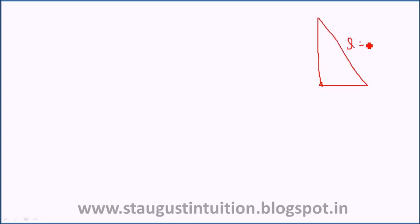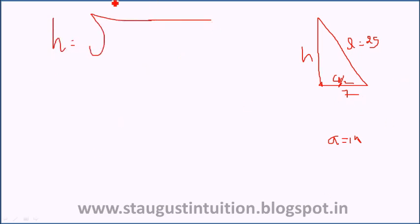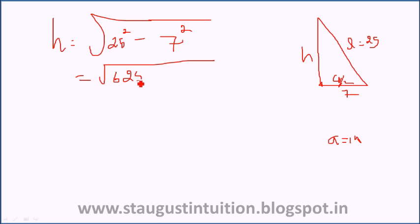Now we will find the height using a right-angle triangle. With slant height L equals 25 and half the base a/2 equals 7, we get height h equals root of 25 squared minus 7 squared, which is root of 625 minus 49, equals root of 576, equals 24.